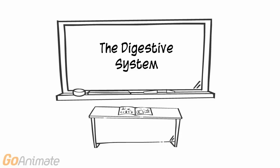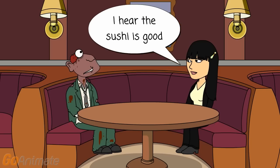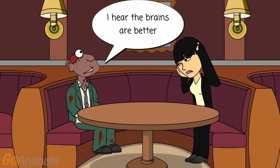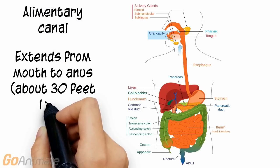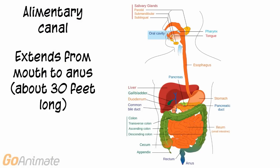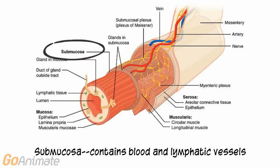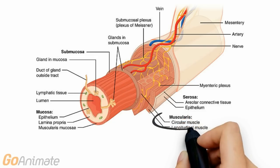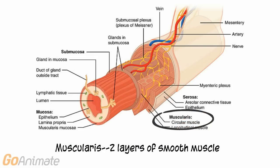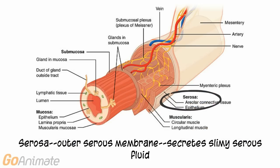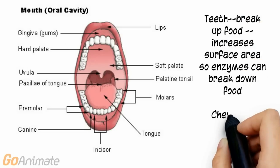Let's learn about the digestive system. The digestive system consists of a long tube called the alimentary canal. The canal extends from the mouth to the anus and is about 30 feet long. The tube consists of four layers: an inner mucous-secreting mucosal layer, a submucosa that contains blood and lymphatic vessels, a muscular layer containing two layers of smooth muscle — one running along the length and one encircling the tube — and an outer serosa that secretes slimy serous fluid.